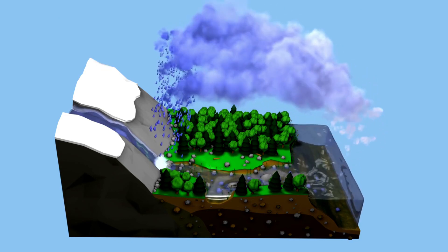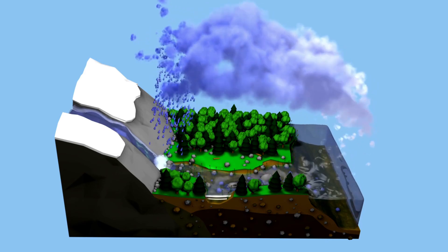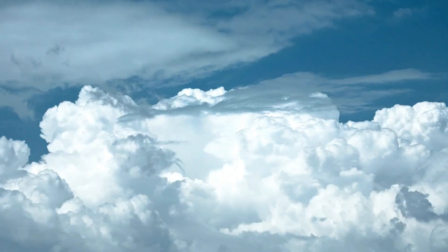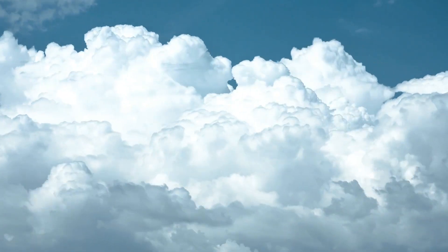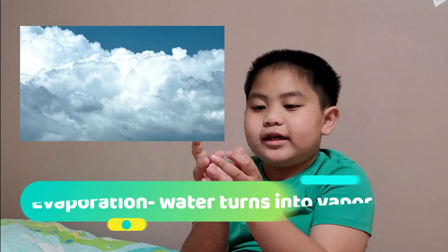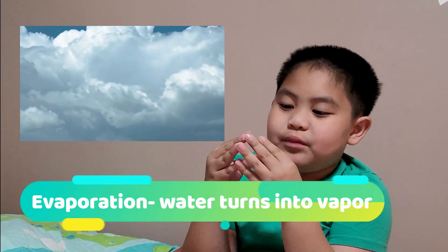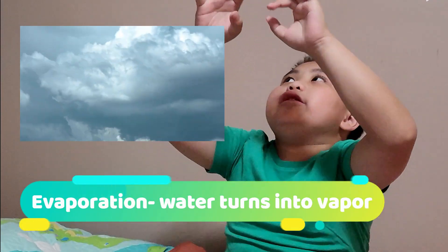There are three parts to the water cycle. First, let's talk about evaporation. Evaporation is where water turns into vapor — it's a big water mass and it just turns into a gas, rises up, then rains down, becomes steam, and goes up again.